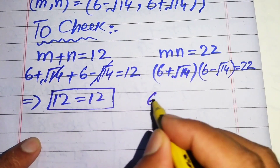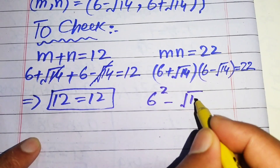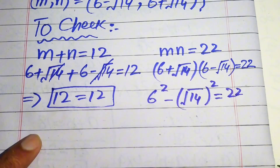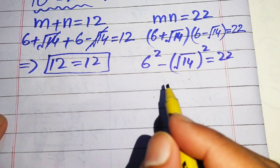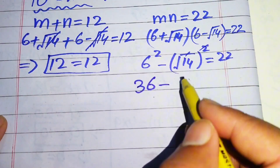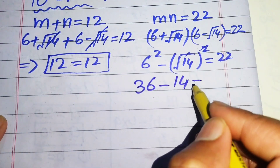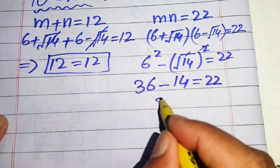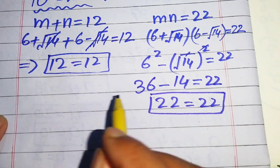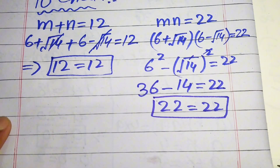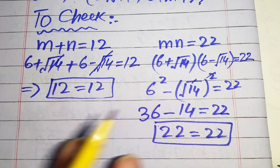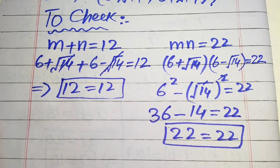For equation 2, we use the difference of squares identity: (6 plus square root of 14) times (6 minus square root of 14) equals 6² minus (square root of 14)² equals 36 minus 14 equals 22. So 22 equals 22, confirming the first solution also satisfies equation 2. This is the final answer. Thank you for watching — please subscribe to my channel for more exciting videos.